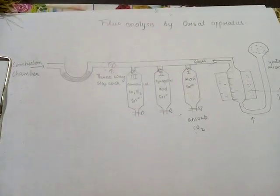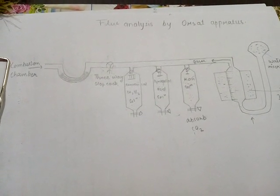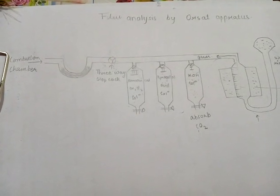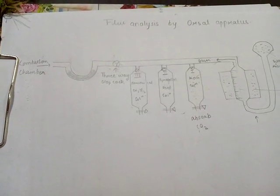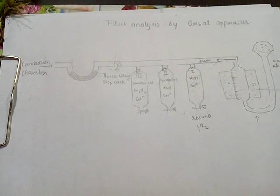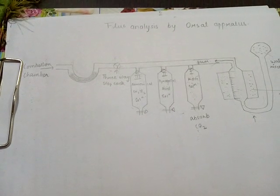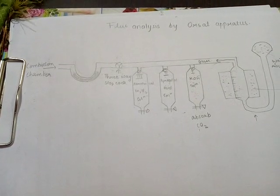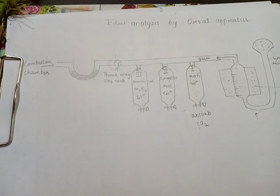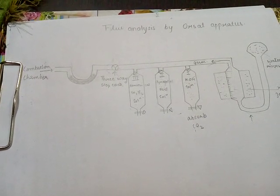Hello everyone, this is my first video. In this I would like to explain the flue gas analysis by the Orsat apparatus. Flue gas is a mixture of carbon dioxide, carbon monoxide, and oxygen coming out from the combustion chamber. The main aim of this experiment is to measure the amount of flue gases released — how much CO2, CO, and oxygen are released from the combustion chamber.